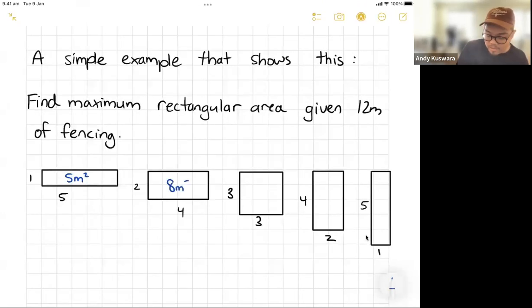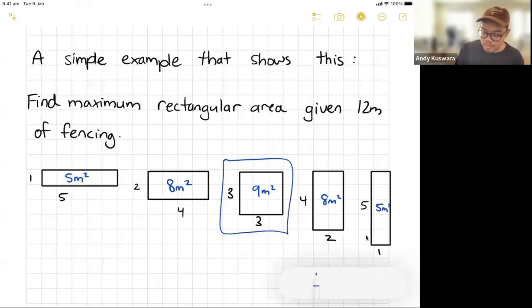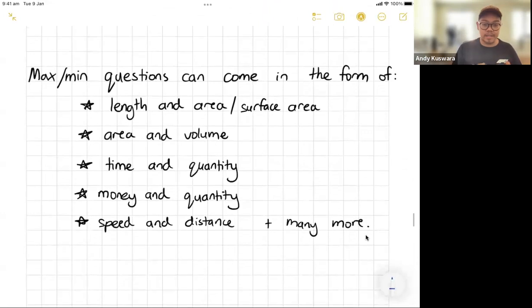Two by four is eight meters squared, nine meters squared so on and so forth, and so you can see that there's one particular one that gives you a maximum area. And so it's kind of weird but we get this idea of we start with everyone has 12 meters of fencing but there's a way that you can do it where you can maximize an area, and similarly there's also a way that you can do it where you would minimize. So that's the idea.